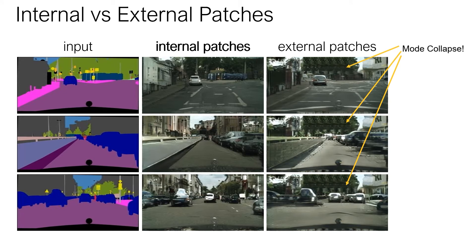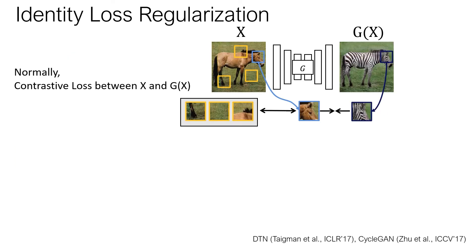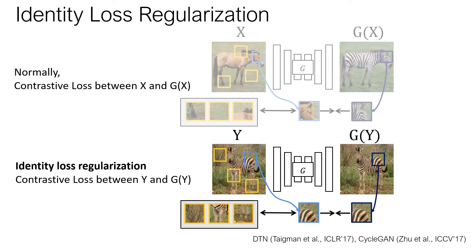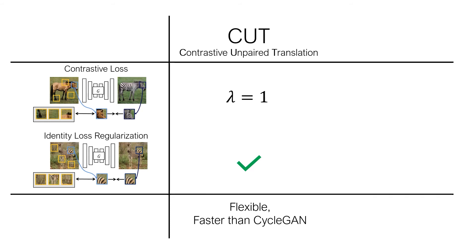For more quantitative results, please refer to our paper. Also, we found that samples from the target domain can be used for regularization, following the identity loss used in CycleGAN. Normally, we compute the contrastive loss using an image from the source domain, which is the horse in this figure. Additionally, we can provide a zebra image from the target domain as input to the generator network, and we still enforce the contrastive loss to prevent making unnecessary changes to the input images. Now we can decide a name for our method: let's call it CUT, short for Contrastive Unpaired Translation. We use the identity regularization as well as the contrastive loss. As opposed to the pixel cycle loss, our loss is more flexible yet faster than CycleGAN.